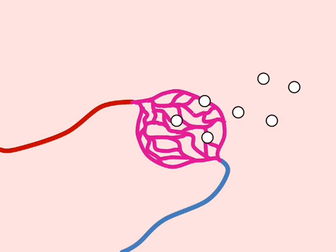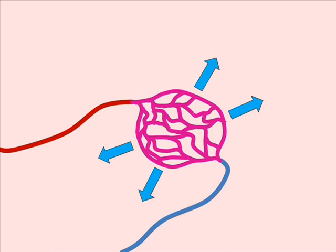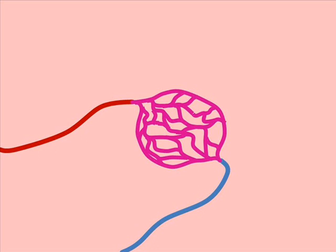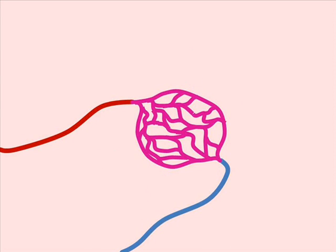These dilated vessels cause noticeable symptoms traditionally associated with inflammation. The increased permeability of the vessel wall allows a greater amount of blood plasma to leak into the surrounding tissue, causing the area around the wound to become swollen. The increased surface area of the dilated vessels results in greater visibility of the red-colored capillaries, giving the skin around the wound a more reddish appearance, and also results in greater heat transfer to the surrounding tissue, making the wounded area warm to the touch.